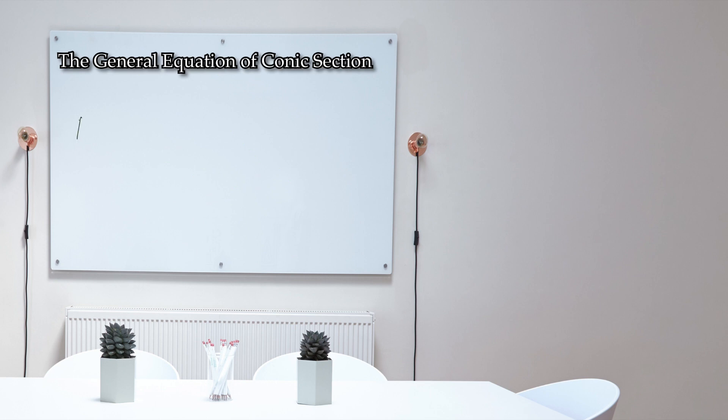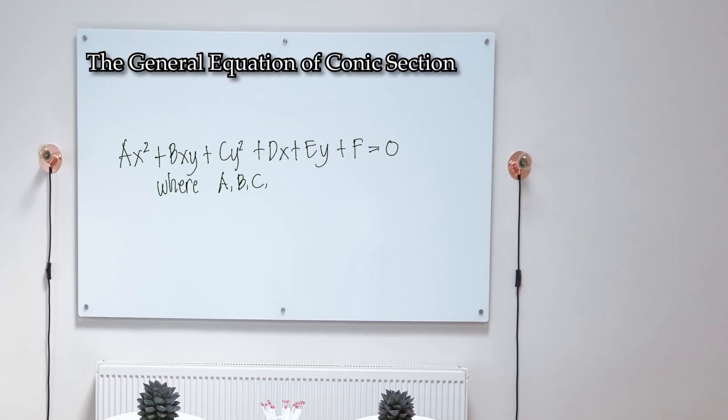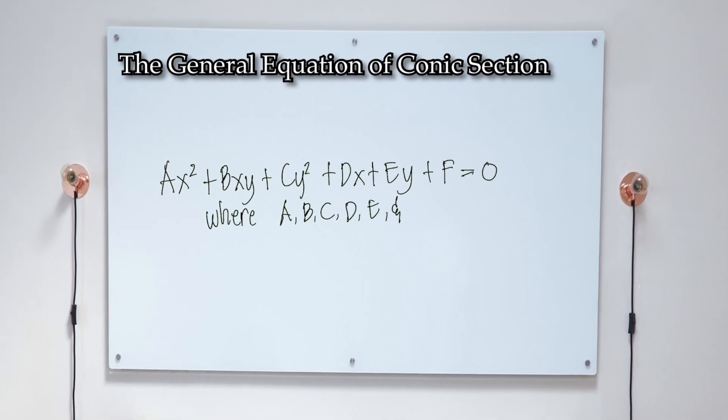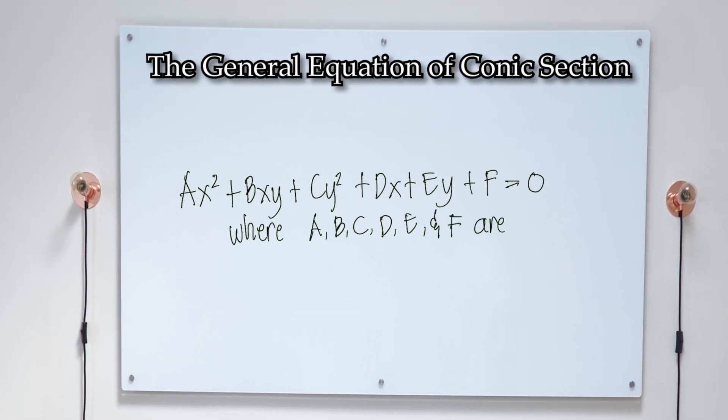The general equation of any conic section is given by ax squared plus bxy plus cy squared plus dx plus ey plus f equals zero, where a, b, c, d, e, and f are all constant.